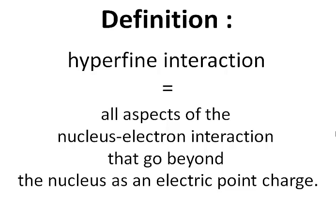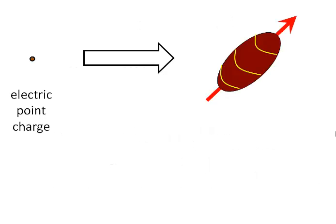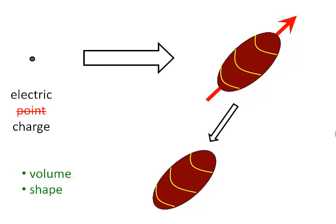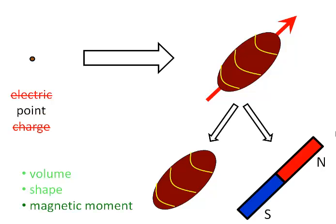What is a nucleus then? How is it more than a point charge? I will visualize this in this cartoon. On one side you have the mathematical electric point charge; on the other side, a cartoon of a real nucleus. There are two types of differences. A nucleus is not just a point charge — it's an object with a volume and a shape, typically an ellipsoid. And a nucleus also has magnetic properties: it has a magnetic dipole moment, which you can visualize as a bar magnet. So a real nucleus is an ellipsoid with a bar magnet inside.